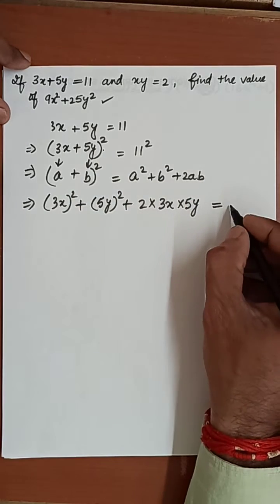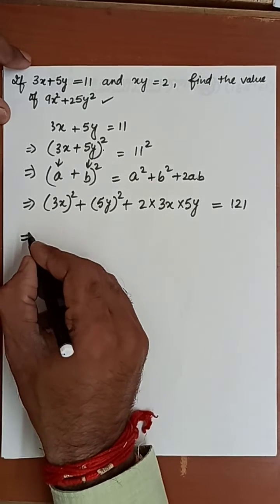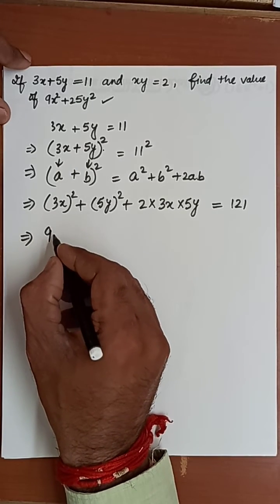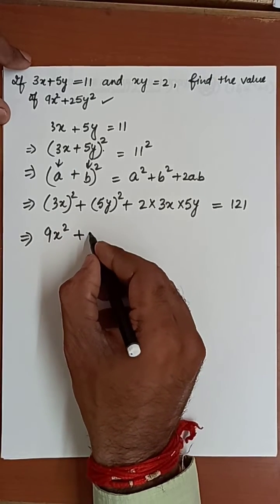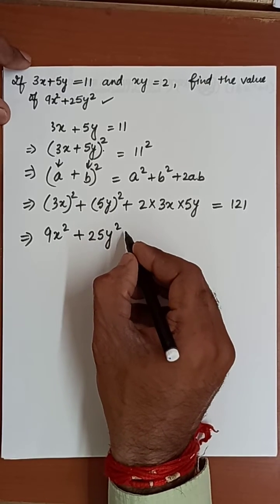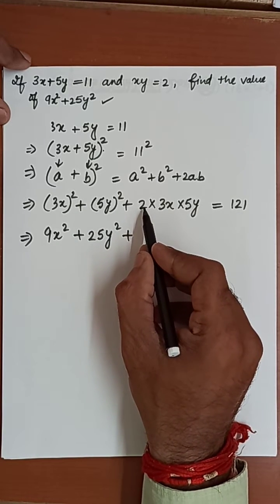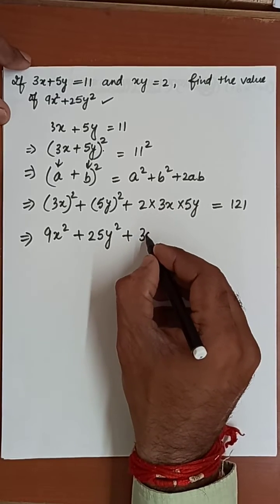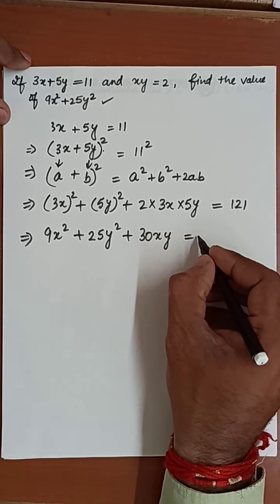Now we will do the square. It will be 9x square, here 25y square, plus now here we will find the product.